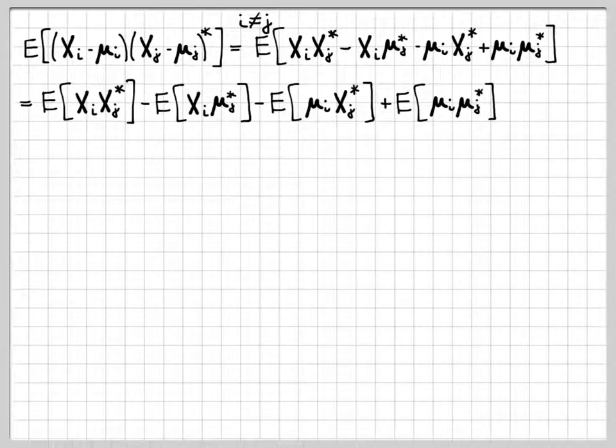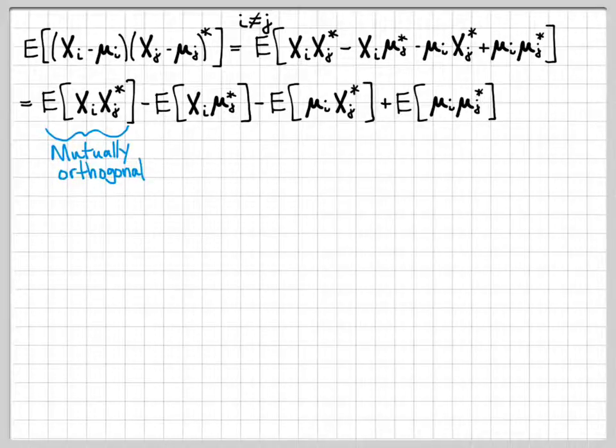So I'll get all of these terms. Now we can use one of the assumptions we were given in the problem, the fact that the vectors are mutually uncorrelated. So when i is not equal to j, we know that this term right here is mutually orthogonal with each other.